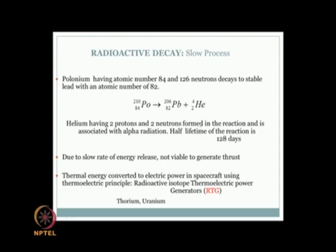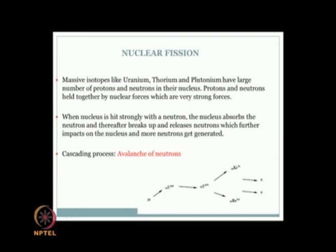Because radioactive decay is slow, the thermal energy is instead converted to electrical power using the thermoelectric principle — this is how Radioactive Isotope Thermoelectric Generators (RTGs) work. RTGs are used in several orbiting spacecraft to generate power but not for propulsion per se. In addition to polonium, substances like thorium and uranium can also be used in radioactive decay processes.